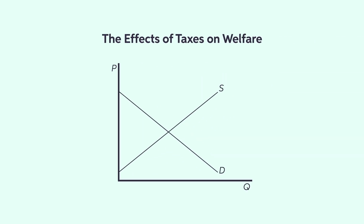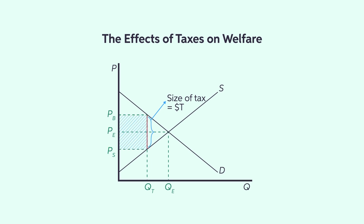To look at the effects of taxes on welfare, look at this figure. Without tax, equilibrium occurs at a price of PE and quantity of QE. When there is a tax of size $T, the equilibrium changes slightly. The price that buyers pay is now PB, the price that sellers receive is now PS, and the equilibrium quantity is now QT. The revenue from tax is given at $T and QT.